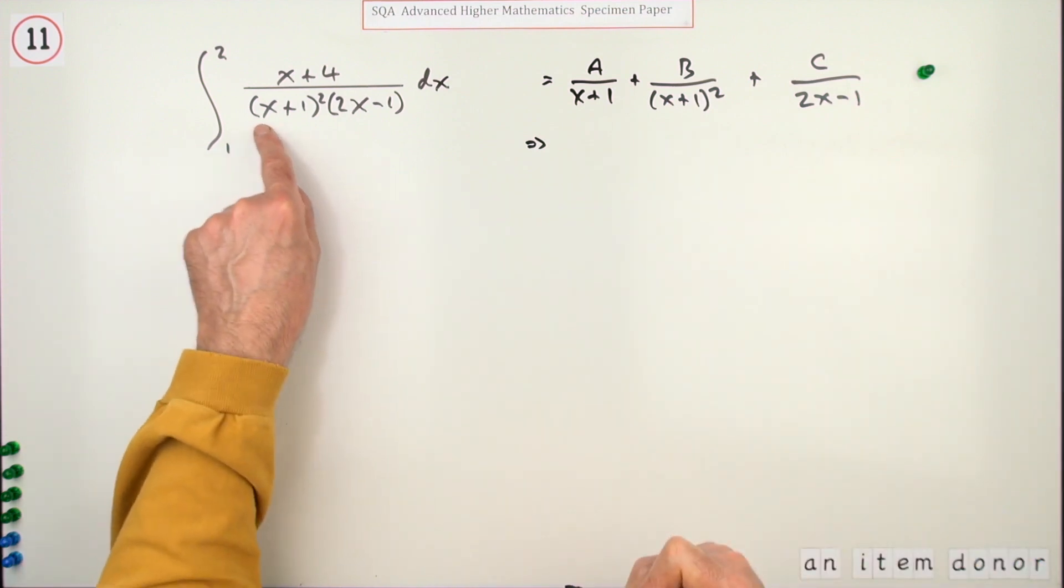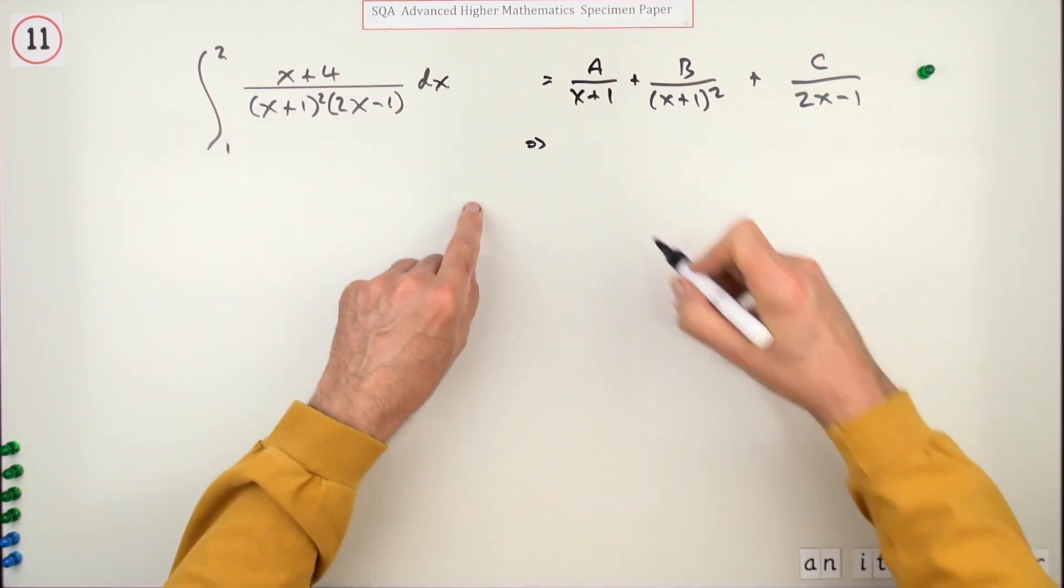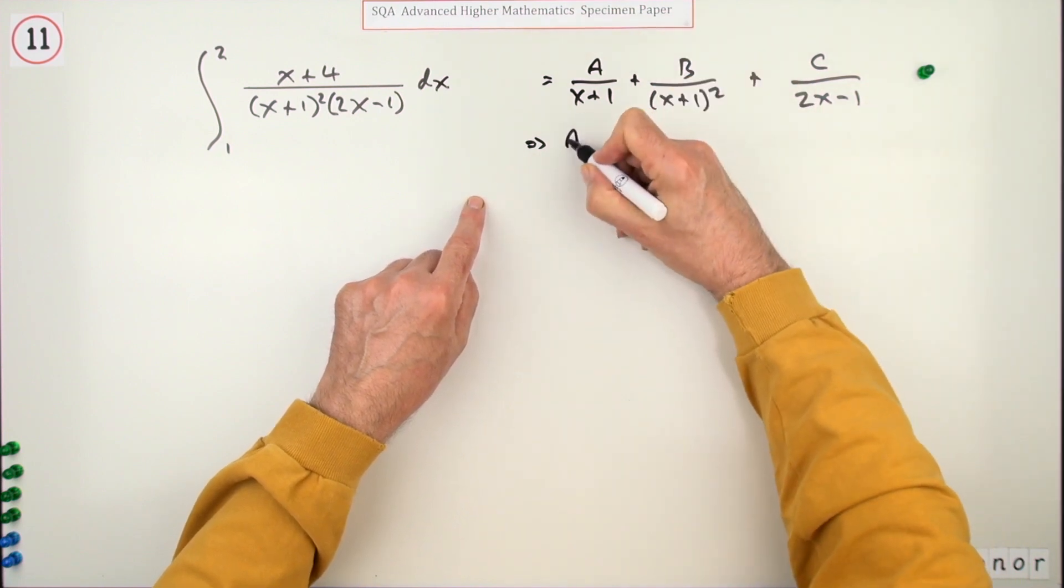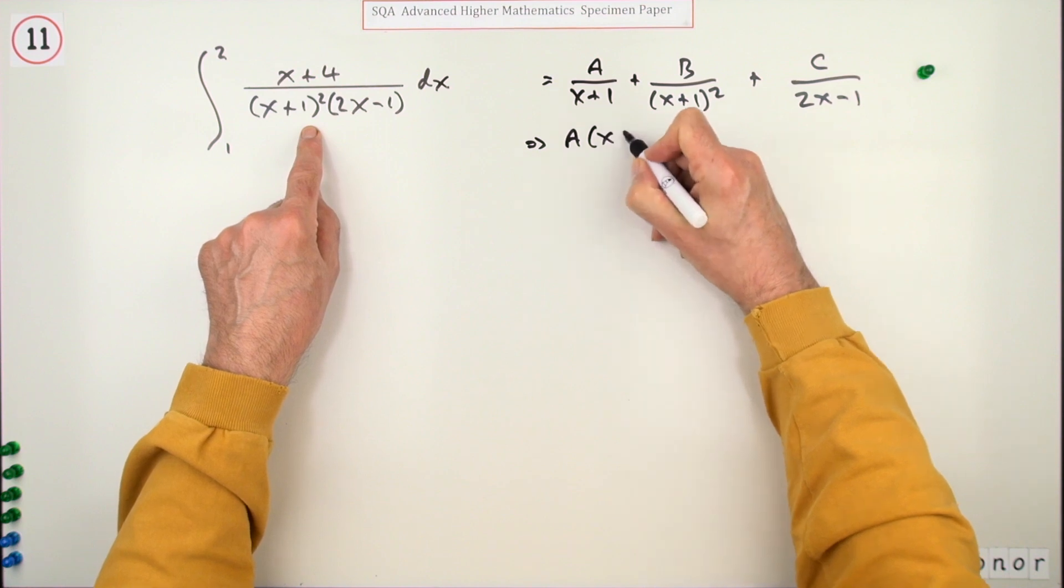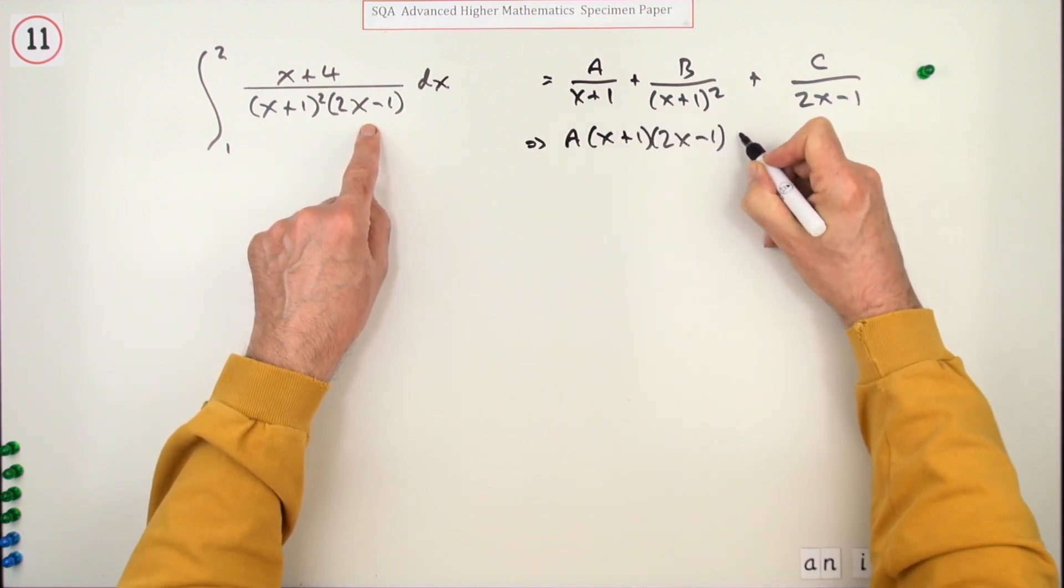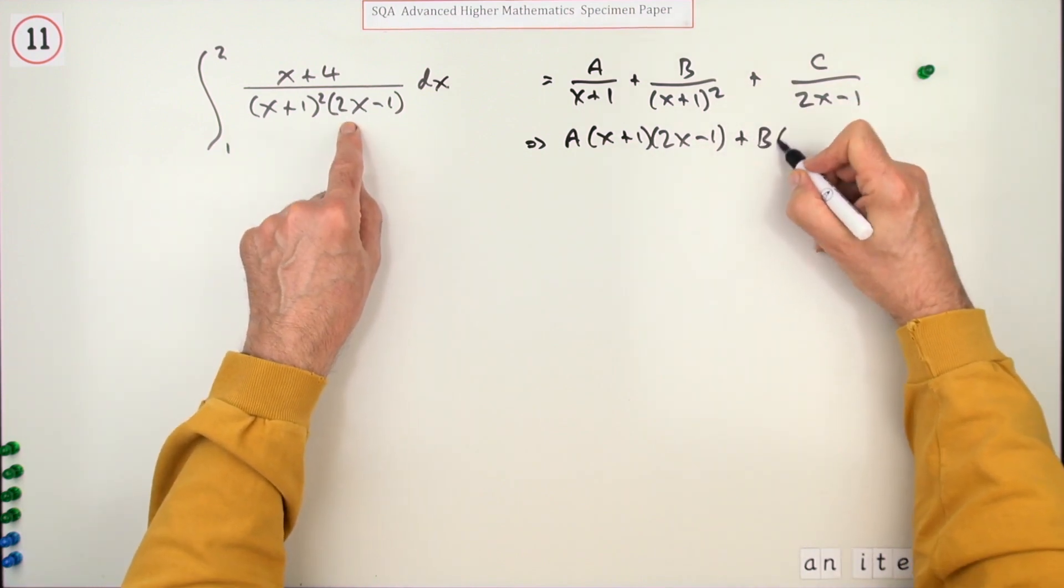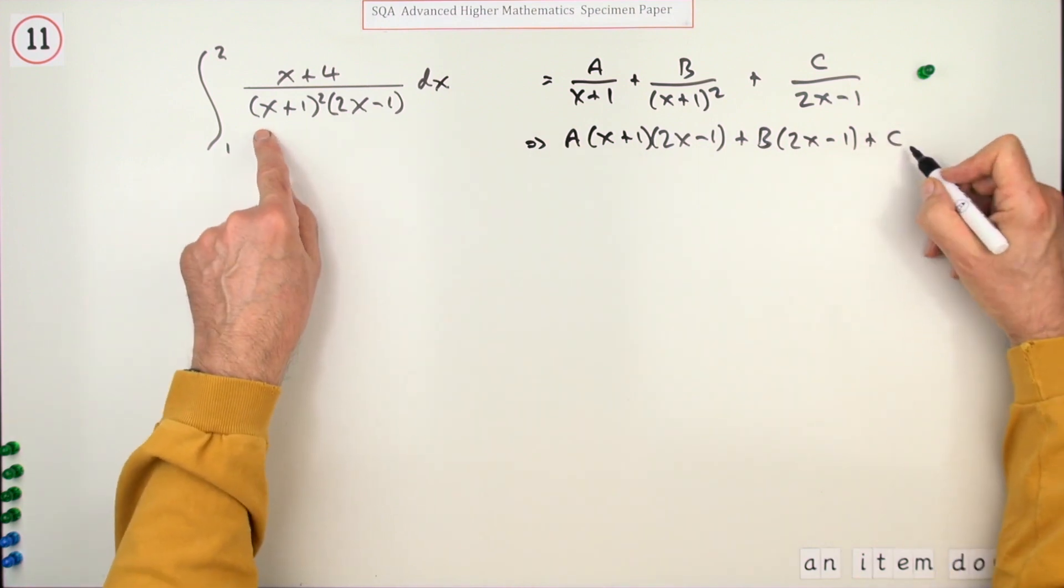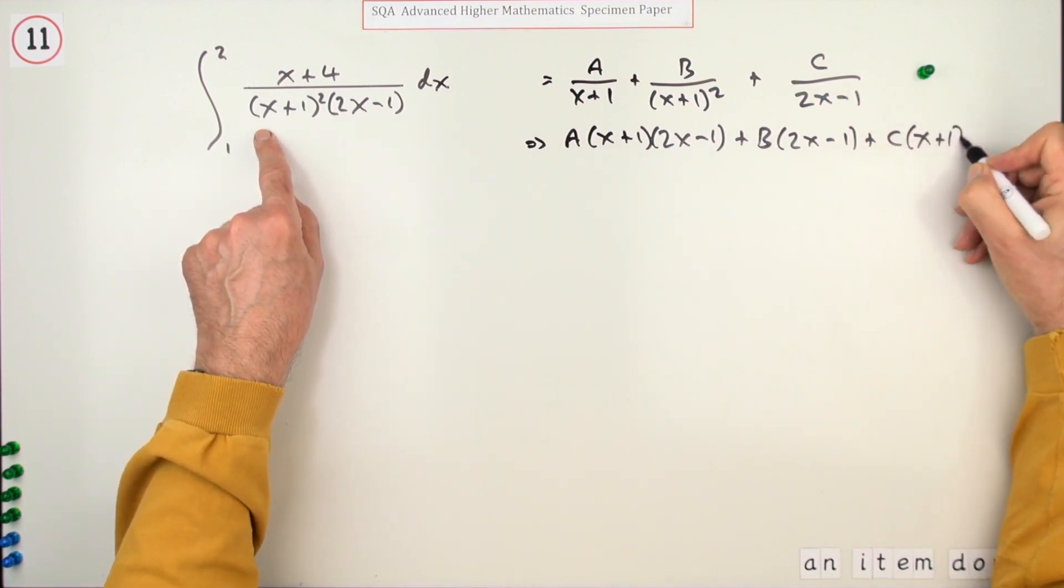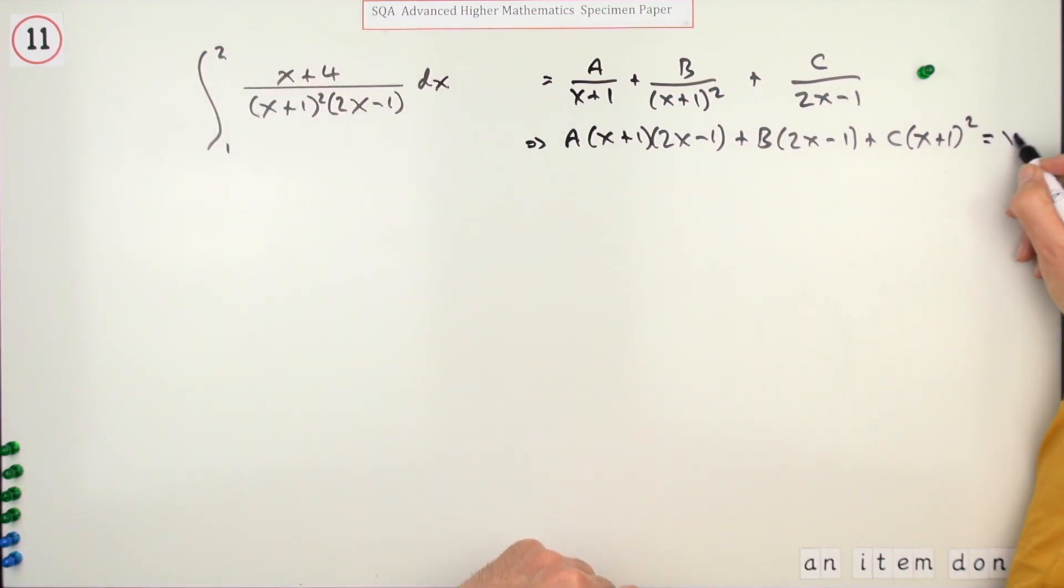If you multiply throughout by this denominator, that'll knock all the denominators out. That will give me A times (x+1)(2x-1), the B's got both of these so it just needs the 2x-1, and the C's got the 2x-1 so it needs both of those parts, the squared part. And all of that will come to x+4.